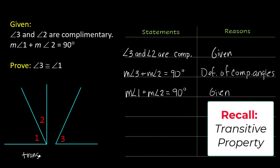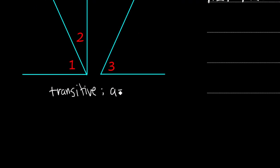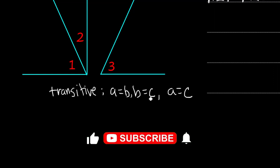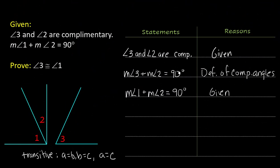The transitive property is one that you use in proofs a lot and what it says is that if a equals b and b equals c then a equals c transitive. I always used to remember it transportation. Things are moving so a moves to b b moves to c so a equals c. These two things are both equal to 90 then these two things have to be equal to each other.